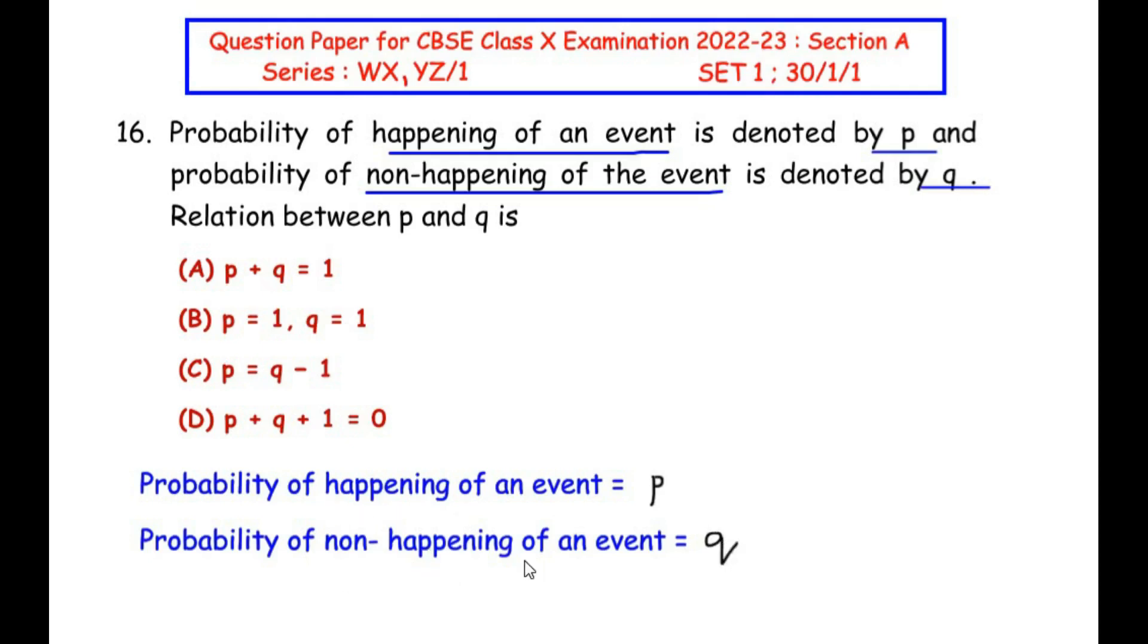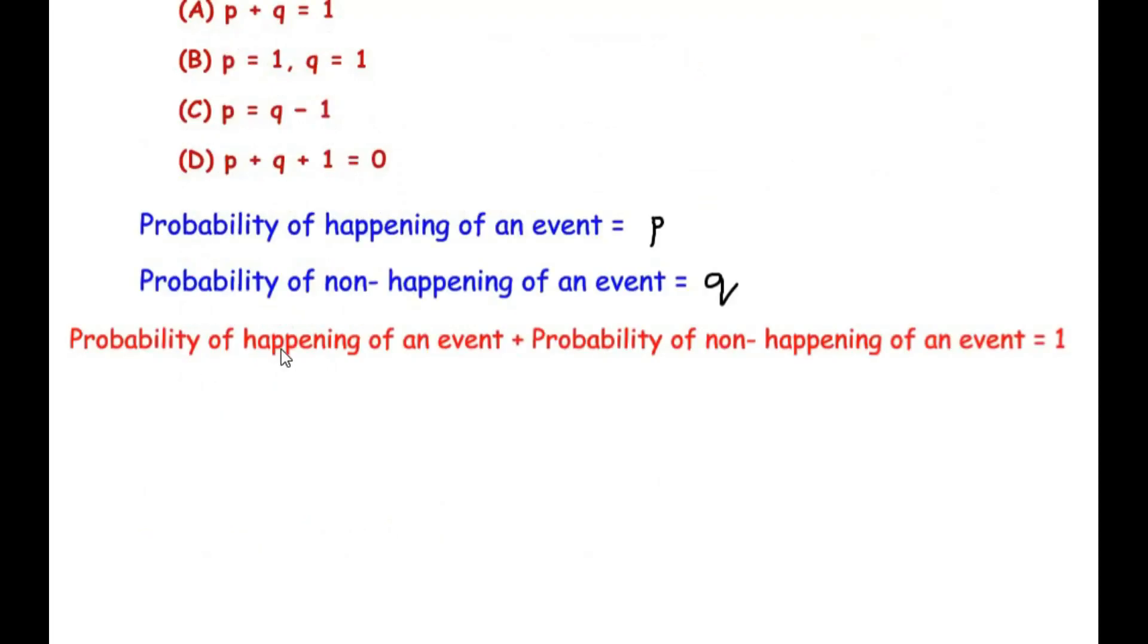So we have a formula for probability which is: probability of happening of an event plus probability of non-happening of the event is always equal to 1, or when we add all the probabilities, the sum of all the probabilities should be equal to 1.